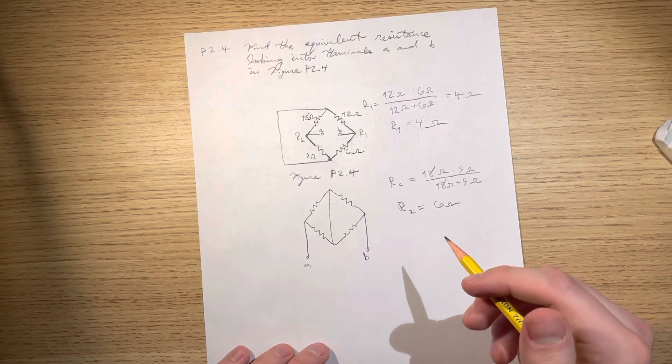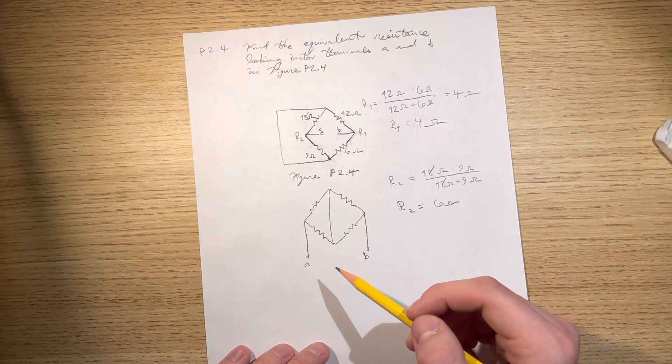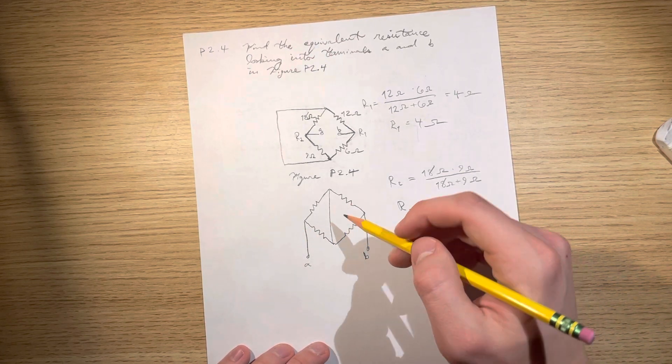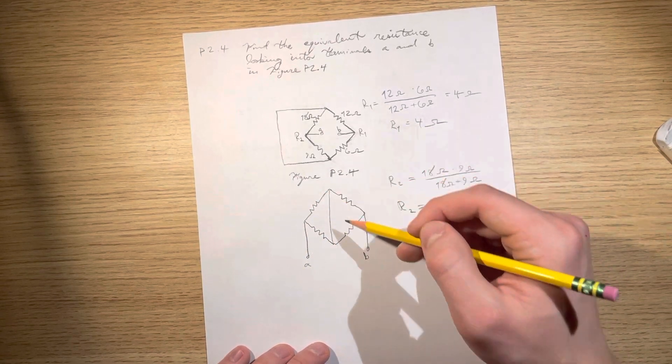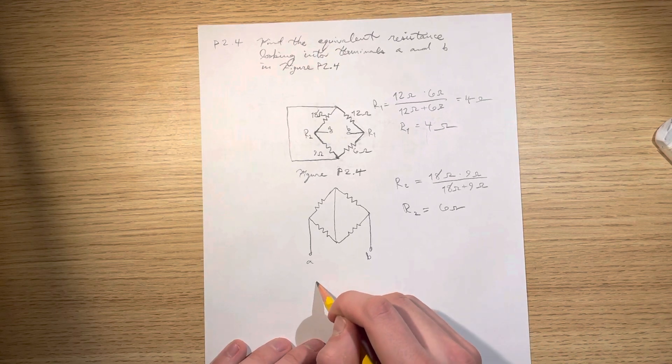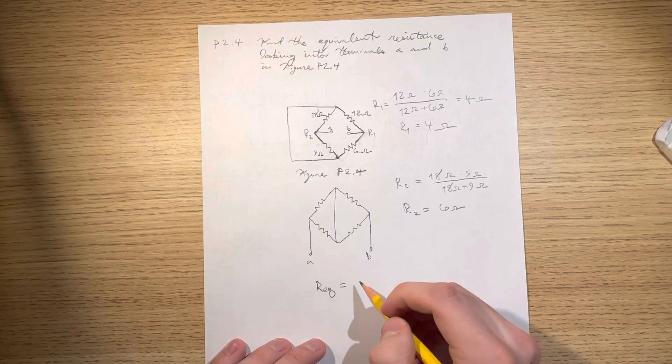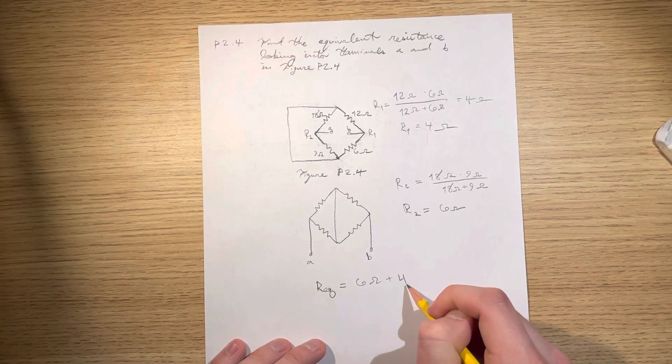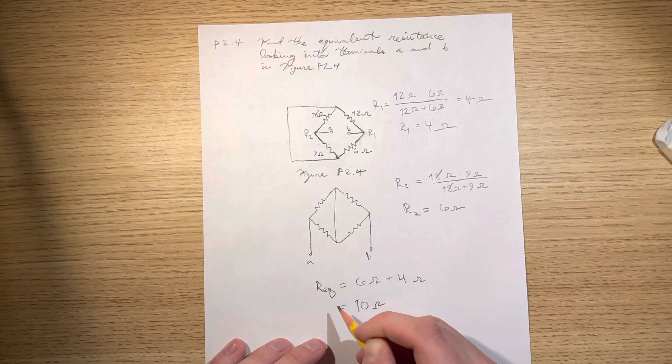Then, what you do next is these are both in series because this whole thing is one, this whole thing is one. This node is just one right here. So, the total resistance is going to be equal to 6 ohms plus 4 ohms, which is equal to 10 ohms.